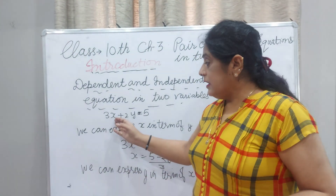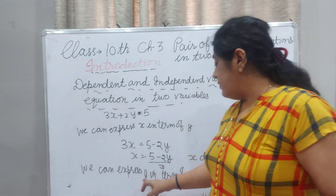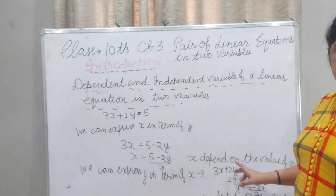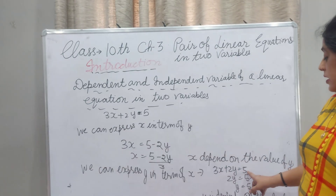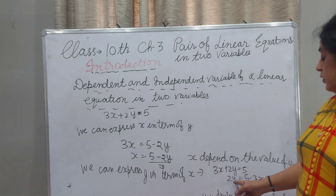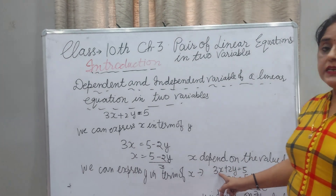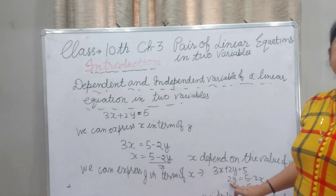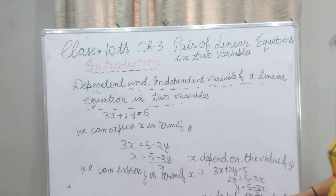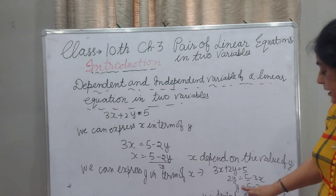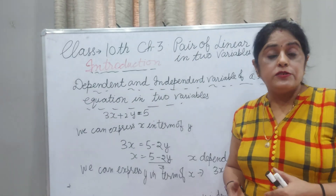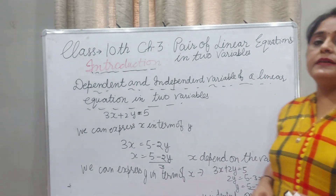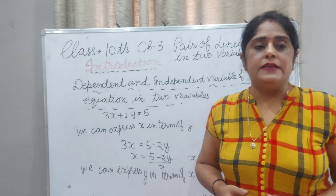With the same equation 3X + 2Y = 5, we can also express Y in terms of X. So 2Y = 5 − 3X; 3X comes to the right side with a negative sign, and 2 divides. Now Y depends on the value of X — if we put X = 0, 1, 2, or any value, we get Y. So here Y is dependent on the value of X, so Y is dependent.